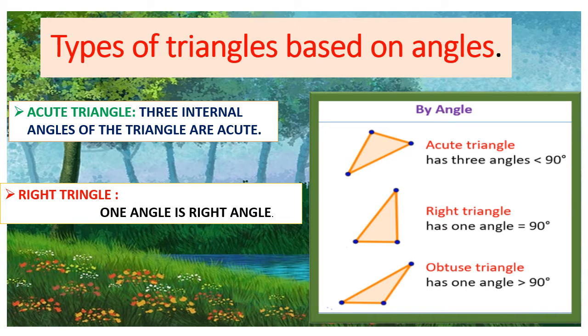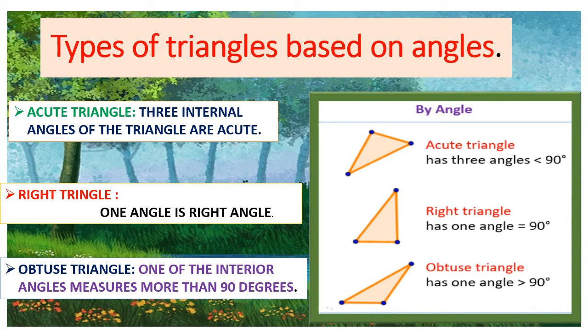And right triangle. One angle is a right angle equal to 90 degrees. And last one, obtuse triangle. One of the interior angles measures more than 90 degrees. Obtuse triangle, more than 90 degrees and greater than also.